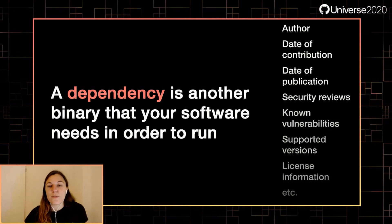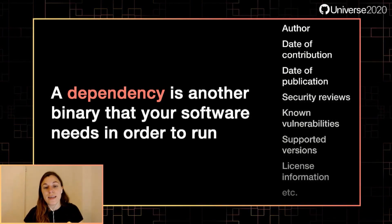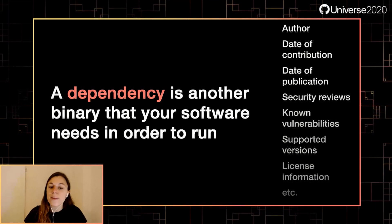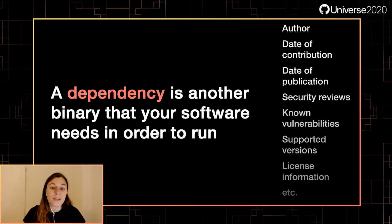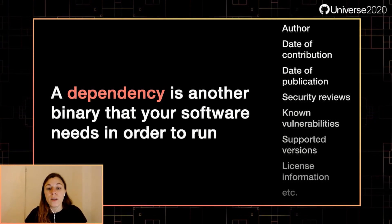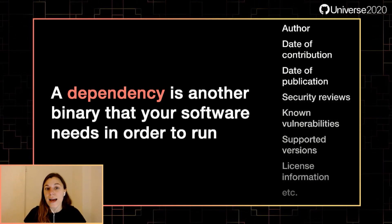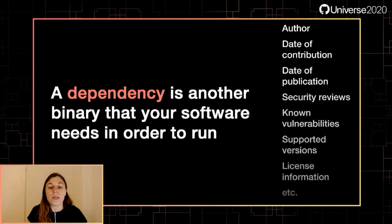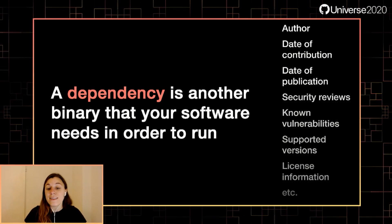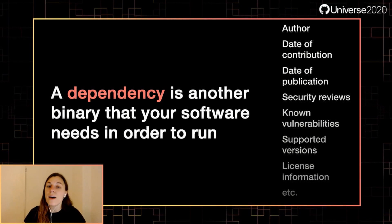One particular piece of information developers should pay attention to is vulnerability information. If your dependency has known vulnerabilities, maybe you should update it to a patched version. However, not all vulnerabilities are properly disclosed or patched, and there are other potential risks to using a given dependency. Other security risks that make it more susceptible to being attacked or harder to detect. Legal and compliance risks for using a dependency in a way that's not in line with the specified license. Maintenance risks, if a dependency is no longer supported and you don't have a viable alternative.